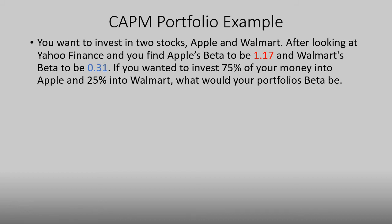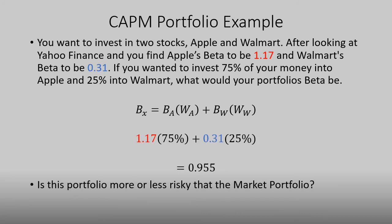In this case, since we have two stocks and we know the amount we're investing in each, the formula is: beta times the weighting of stock 1 (Apple) plus beta times the weighting of stock 2 (Walmart). If you do the math, you'll see that the portfolio's beta is 0.955.